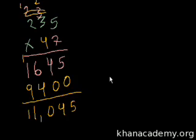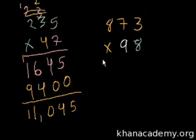Now let's try another one. We have 473 multiplied by 98. Starting with 8, we multiply 8 by 473, which gives us 3,784.